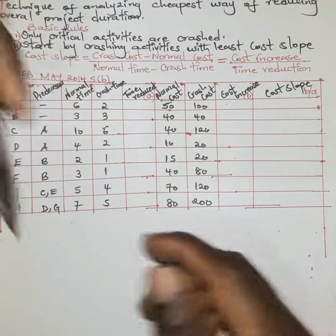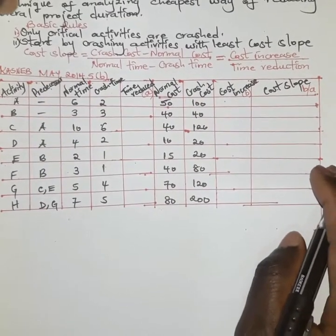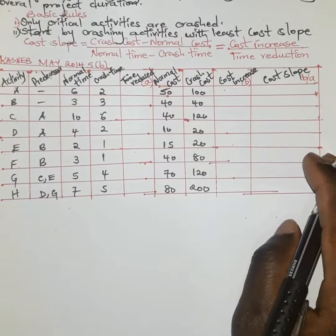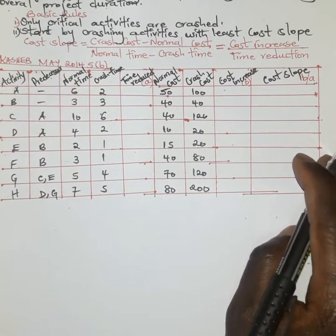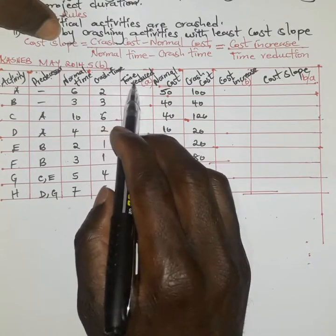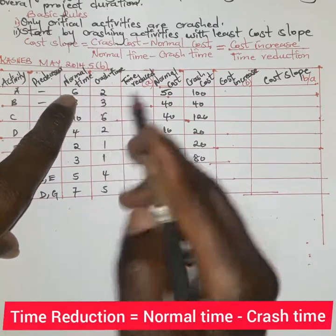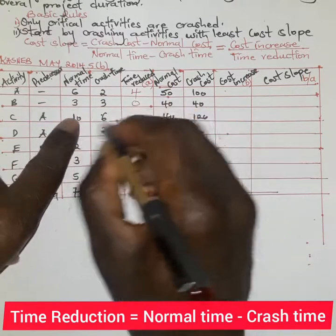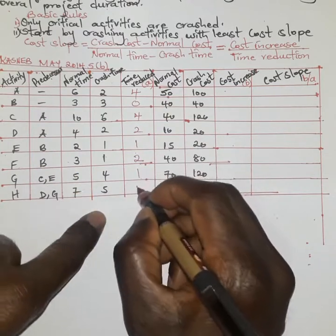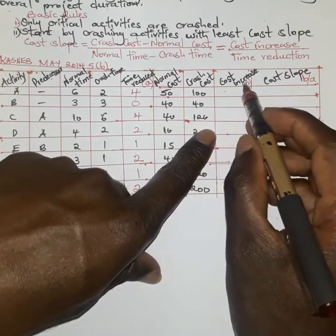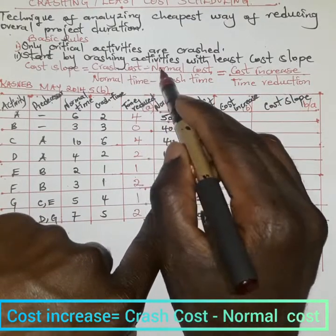We first start by drafting the network diagram, using the activities, their predecessors, and the normal time durations. For determining the time reduced, we subtract the crash time from the normal time — for example, 6 minus 2 is 4. For the cost increase, the formula is crash cost minus normal cost.